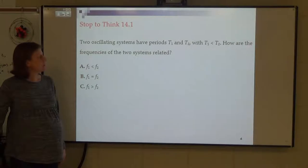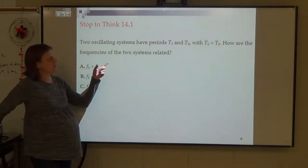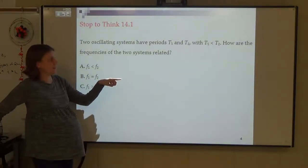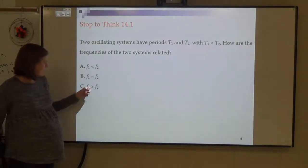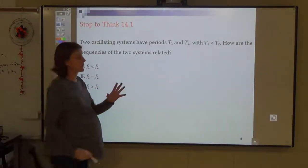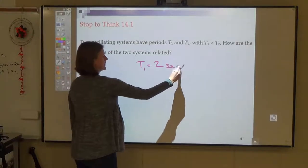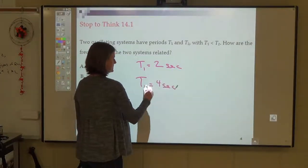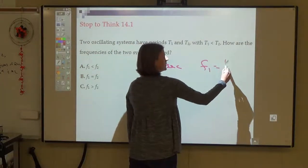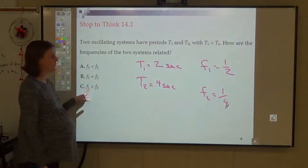Two oscillating systems have periods T1 and T2, with T1 less than T2. How are the frequencies related? They're inversely related, so if T1 is less than T2, then F1 should be greater than F2. You can check that with numbers: if T1 is two seconds and T2 is four seconds, frequency would be one-half and one-fourth respectively, so F1 is greater than F2.